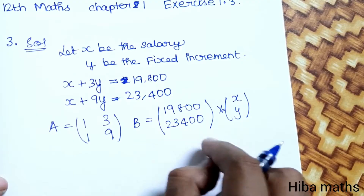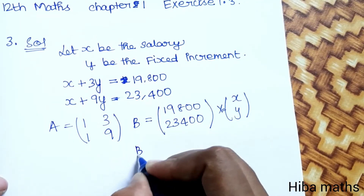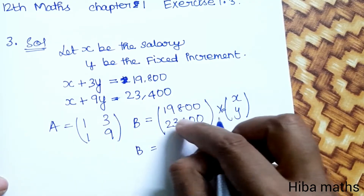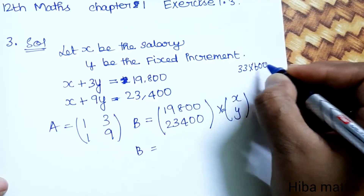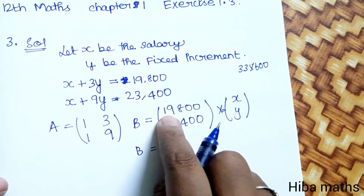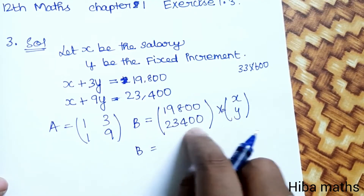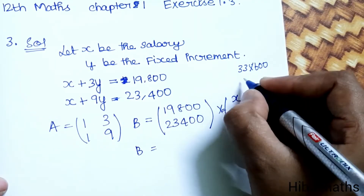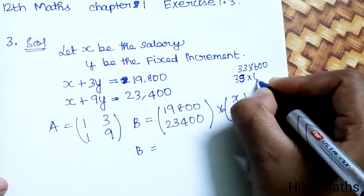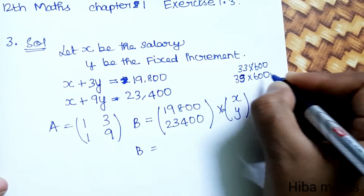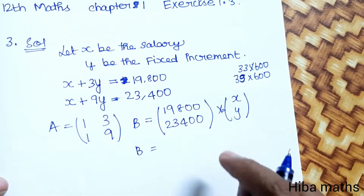Let me verify the values. 33 times 600 is going to be 19,800, and 39 times 600 is going to be 23,400.